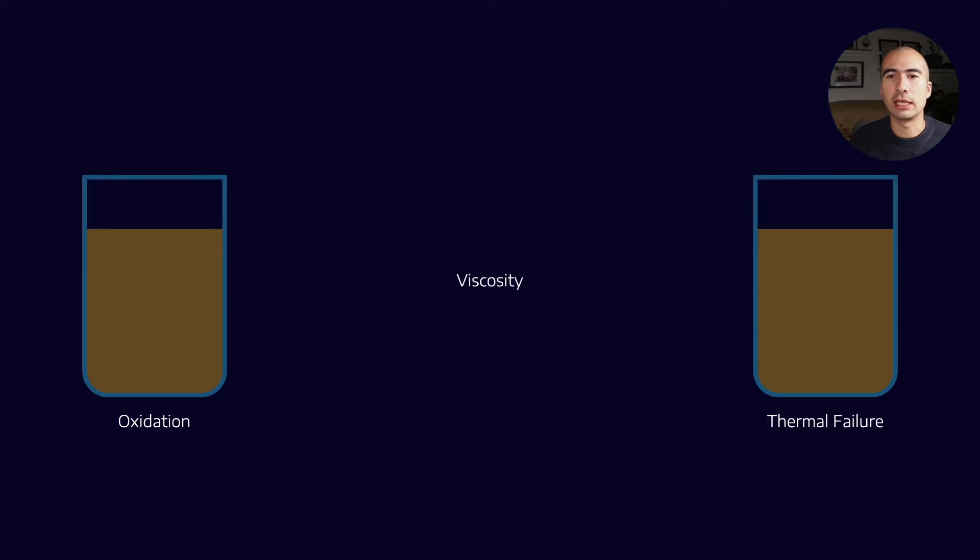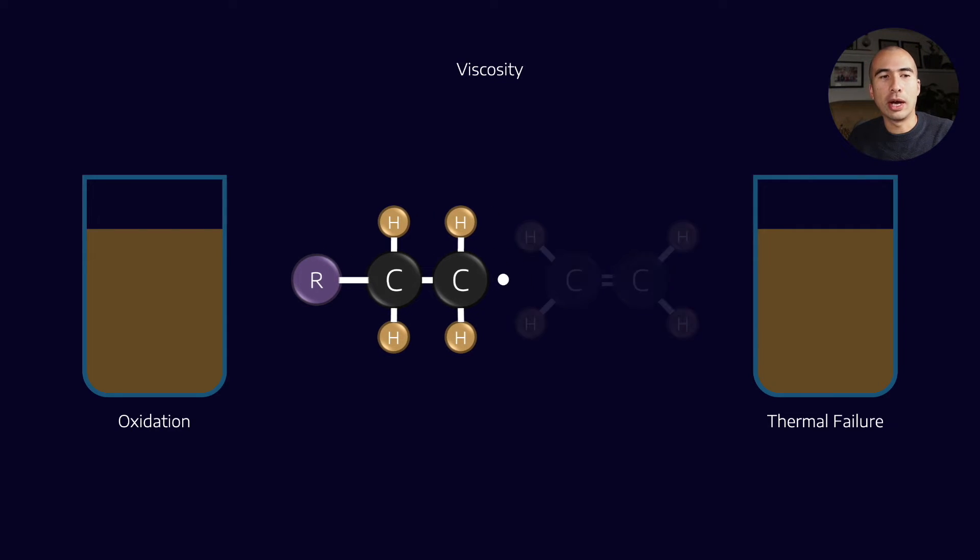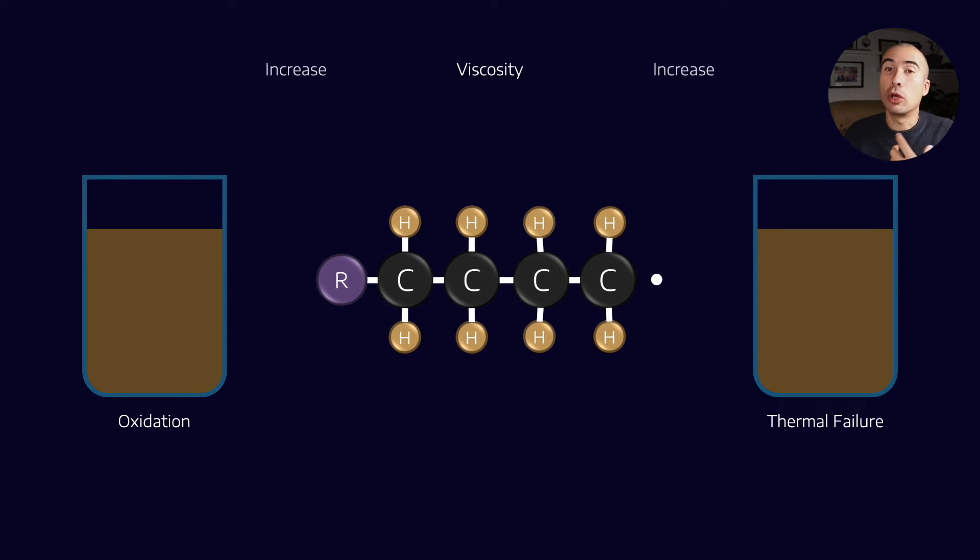This is because free radicals within the lubricant promote a process called polymerization, and that can happen one of two ways, either addition or condensation. Now thermal failure when it breaks apart molecules is also creating radicals, so it can also precipitate this addition reaction as well. What you get is basically radicals wanting to connect to other molecules and creating longer chain molecules, and molecules that have longer chains generally have higher viscosities.